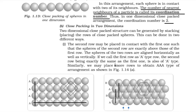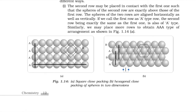Let's give a short revision. Close packing in two dimensions may be of two types. In square close packing, layers are arranged in A, A, A, A type, and the coordination number is 4. In hexagonal close packing, the layers are arranged in A, B, A, B type, and the coordination number is 6. These are the key differences between square close packing and hexagonal close packing structures in two dimensions.